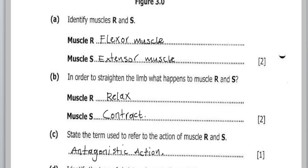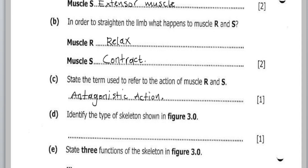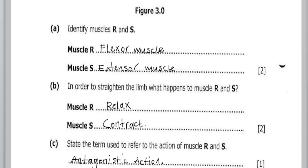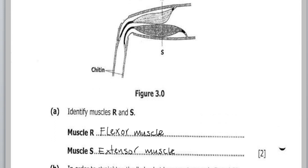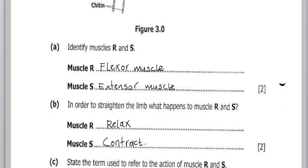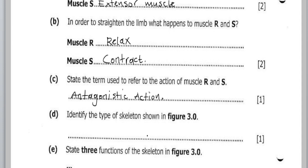We are also asked to identify the type of skeleton shown in Figure 3.0. The skeleton is on the outside, so it is called an exoskeleton. There are two types: exoskeleton and endoskeleton. The type shown here is an exoskeleton.